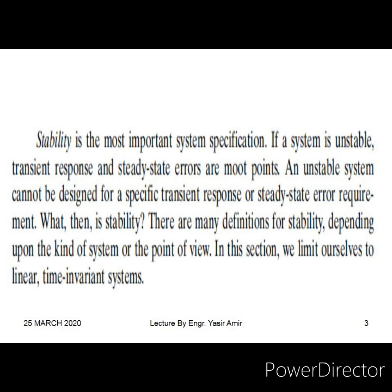What is happening is that we have a system, we give it some input, a transient in its response comes, and then for a good well-behaved system that transient dies away eventually. Then we have a steady state. There can be two problems: number one, either the transient response does not die eventually to zero — it remains there and keeps on growing — and such a system is called an unstable system.